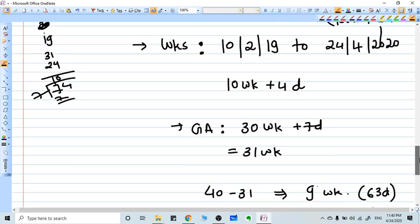So it comes, if we total this all over, 30 weeks plus 7 days. And 7 days is another week, so 31 weeks. So 31 weeks gestational age has been done for this baby.